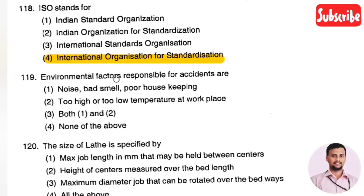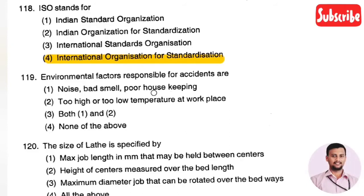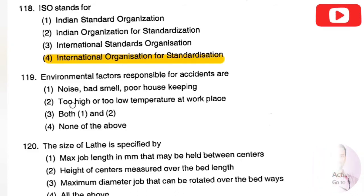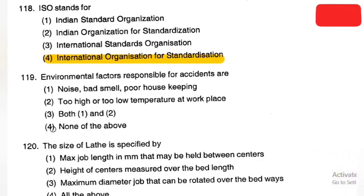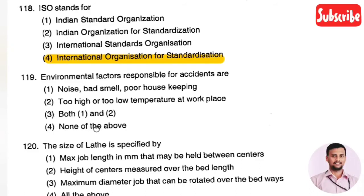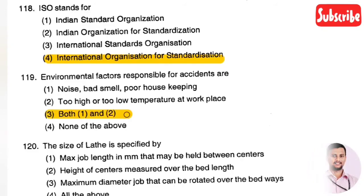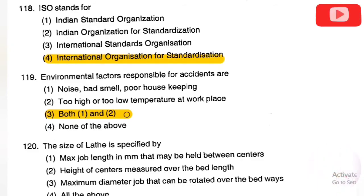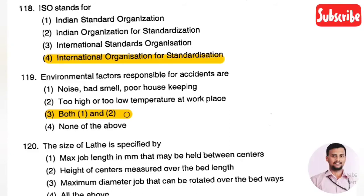The next question: the environmental factors responsible for accidents are — Option 1: noise, bad smell, poor housekeeping, Option 2: too high or too low temperature at the workplace, Option 3: both one and two, Option 4: none of the above. The right answer is Option 3, both one and two — noise, bad smell, poor housekeeping, and temperature all influence the work environment and are responsible for accidents.